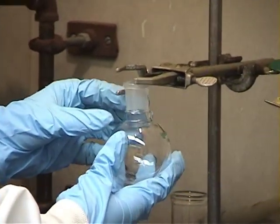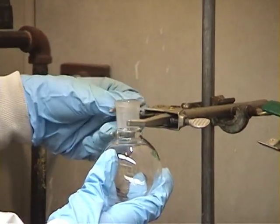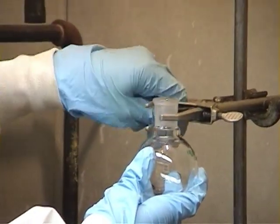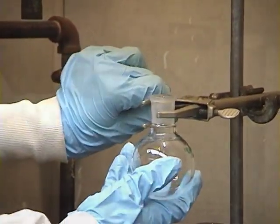a round bottom flask is clamped to one ring stand. The flask must be large enough that the solution does not take up more than half the flask.